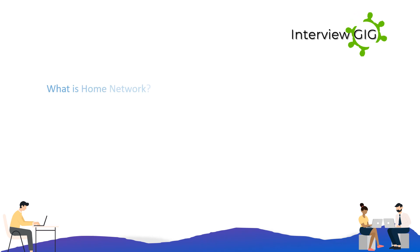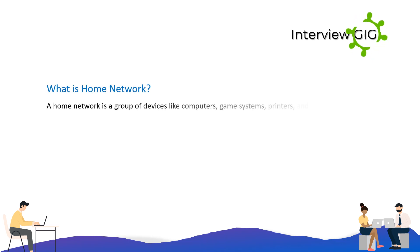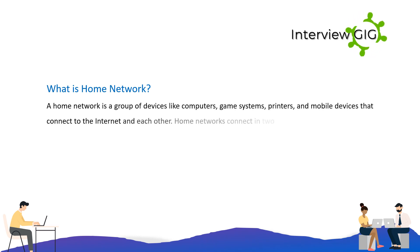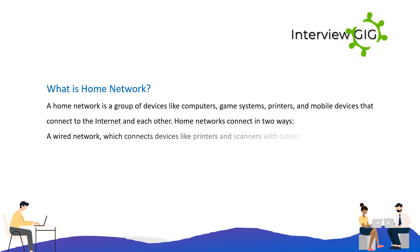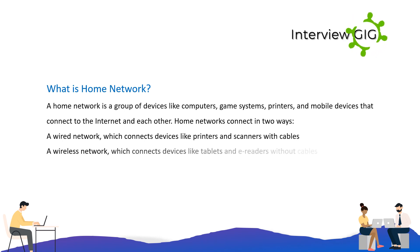What is a home network? A home network is a group of devices like computers, game systems, printers, and mobile devices that connect to the internet and each other. Home networks connect in two ways: a wired network, which connects devices like printers and scanners with cables, and a wireless network, which connects devices like tablets and e-readers without cables.